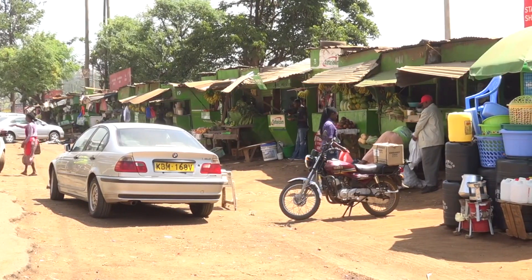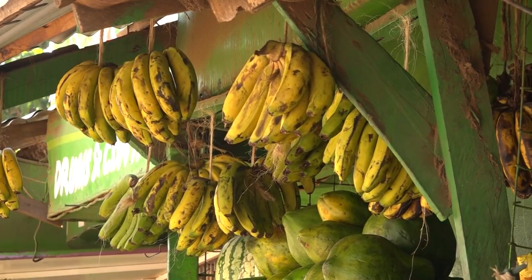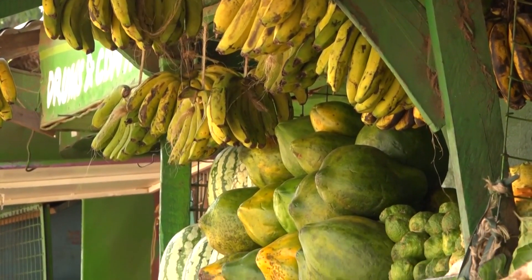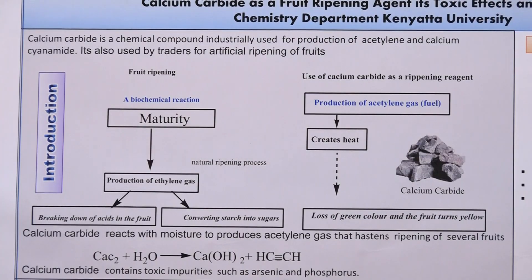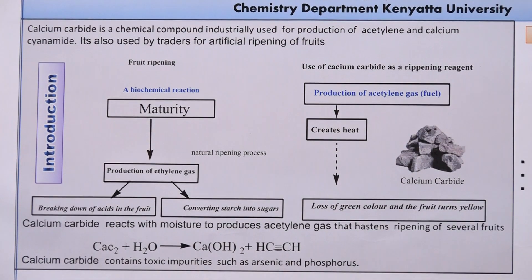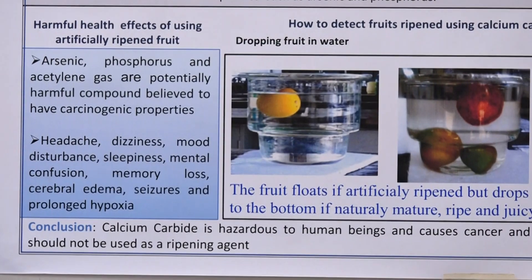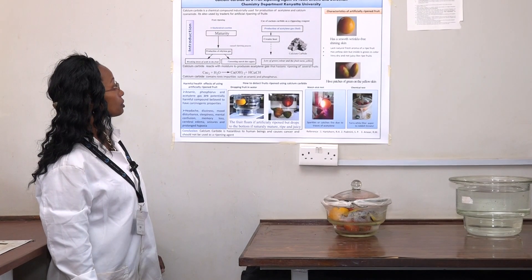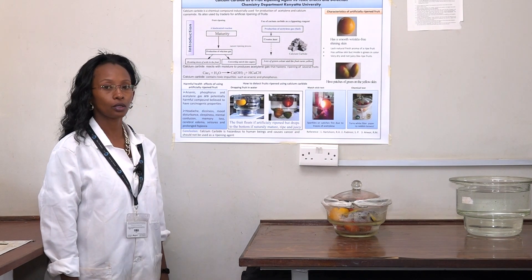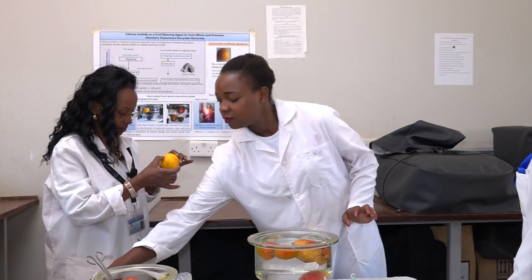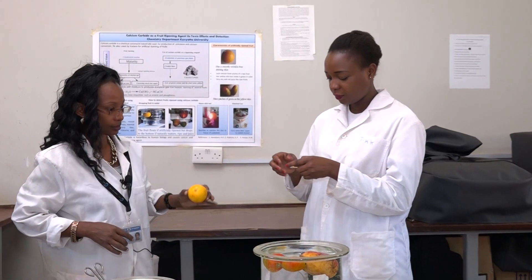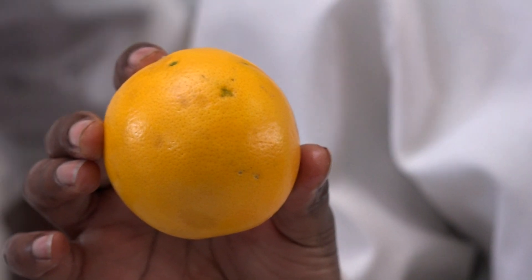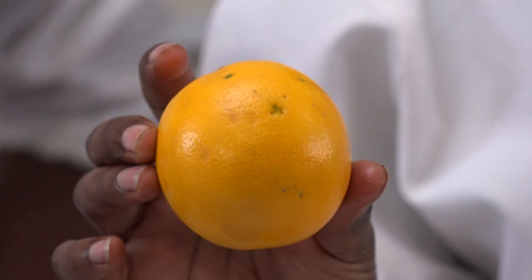After we brought you the first story on the effects of calcium carbide, which is a lab chemical used by fruit vendors and farmers to force the ripening process of fruits, we now head to the chemistry lab to do an experiment that will help us physically differentiate fruits ripened artificially from those that ripen naturally. Jen Buru, a senior laboratory technician in the chemistry department at Kenyatta University, takes us through the process by testing the ripened fruits for any chemicals.